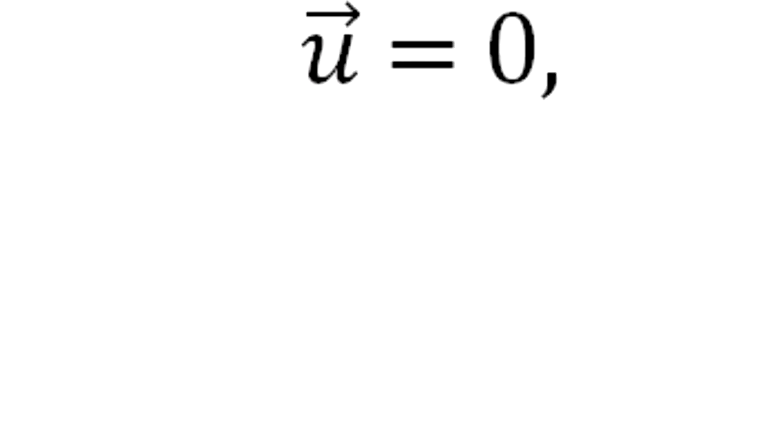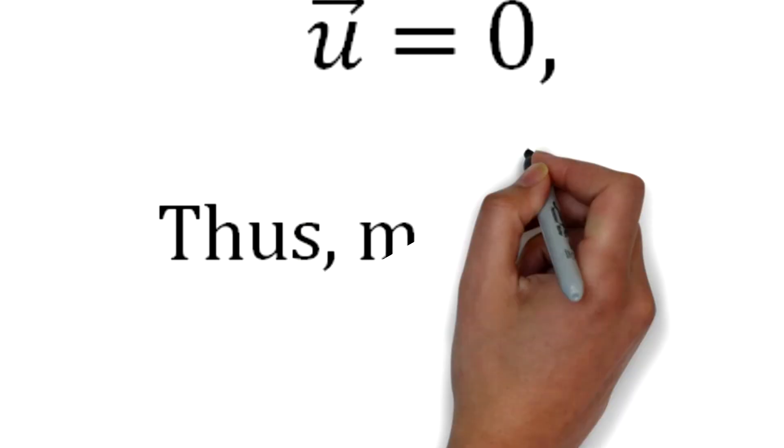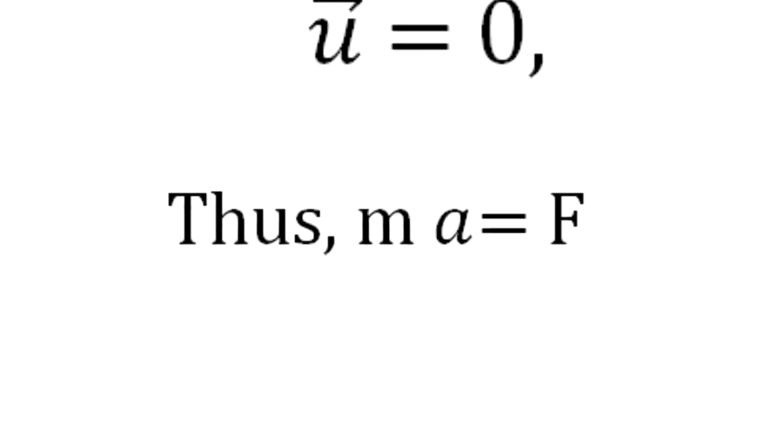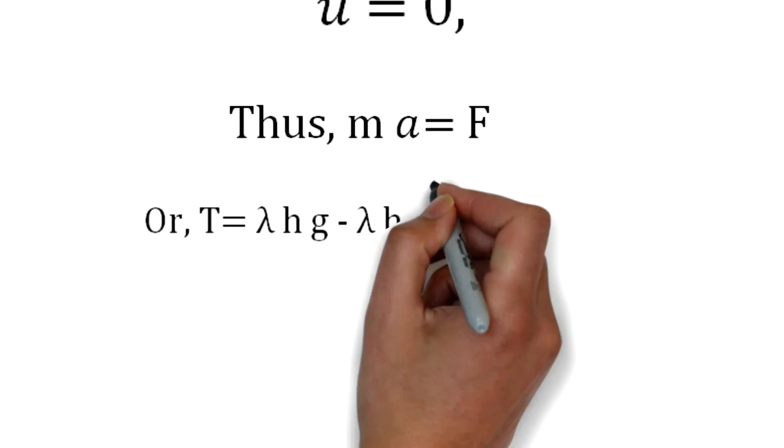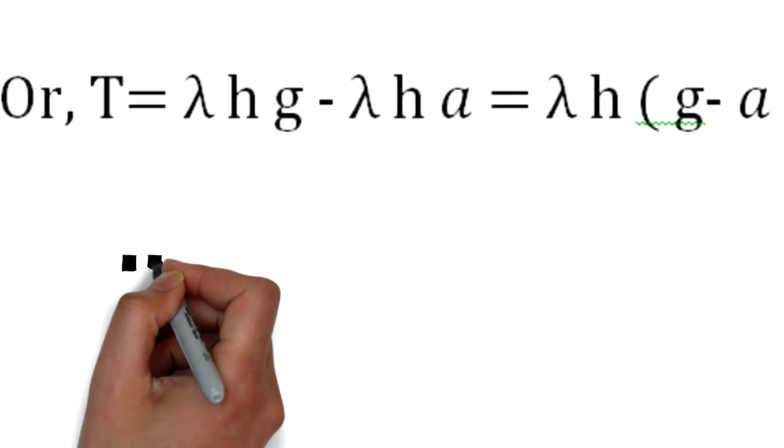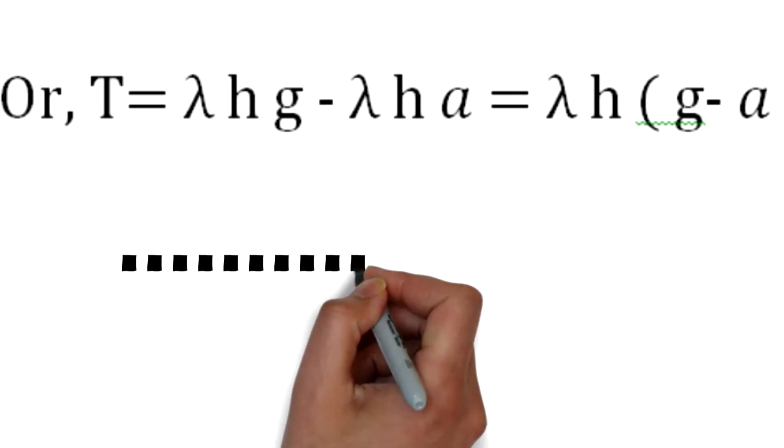Similarly for the overhanging part we can write u = 0. Thus ma = F or T = lambda h g - lambda h a = lambda h (g - a). This is our equation number 2.